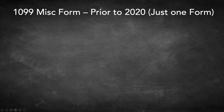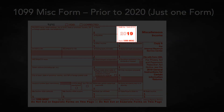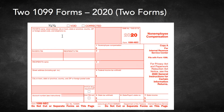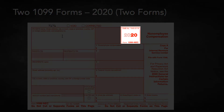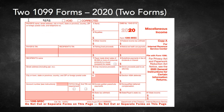Until 2020, there used to be just one form, which is the 1099 MISC form or miscellaneous form. In 2020, IRS changed rules and came up with a separate form to track non-employee compensation, which is the 1099 NEC form. The 1099 MISC form now contains the rest of the boxes, just like previous years.